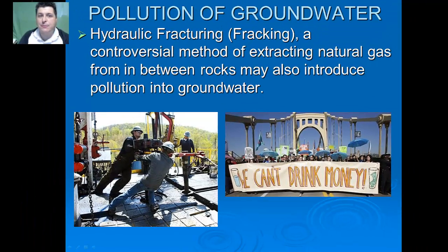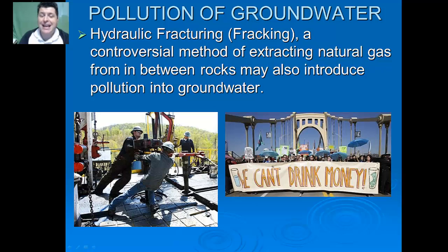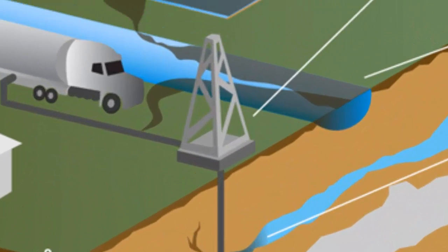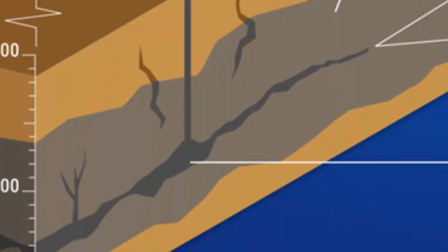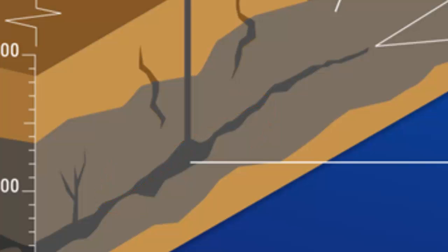Another major source of groundwater pollution in the news is hydraulic fracturing, also known as fracking. This is a controversial method for extracting natural gas from in between rocks that may also introduce pollution into groundwater. With hydraulic fracturing, the idea is that we drill down well below the water table into rock which may contain natural gas, like shale for example. We then pump millions of gallons of a proprietary mixture containing water and other chemicals under high pressure into that rock, and as that enters into the rock bed, it breaks and fractures the rock, releasing the natural gas so that it can be harvested.